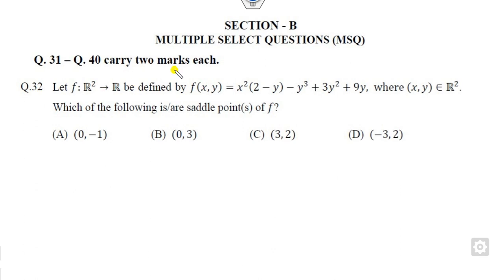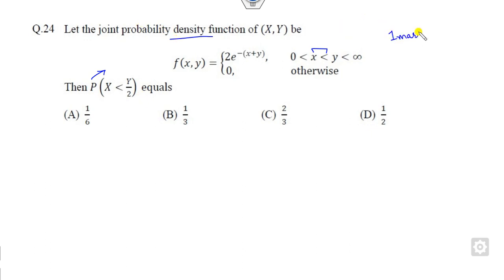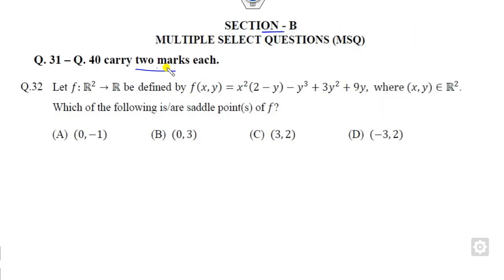Question number 32 is related to section B and it is worth two marks. So this question is of one mark and this is for two marks each.